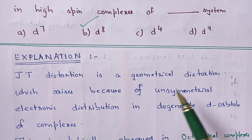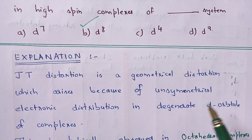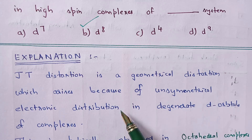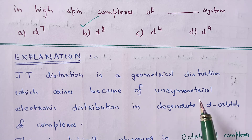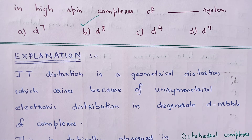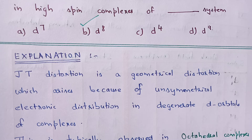Jahn-Teller distortion is a geometrical distortion which arises because of unsymmetrical electronic distribution in degenerate d-orbitals of complexes. Therefore, the reason behind Jahn-Teller distortion is unsymmetrical electronic distribution. Because of that unsymmetrical electronic distribution, the geometry of the complex will be distorted. That is called Jahn-Teller distortion.